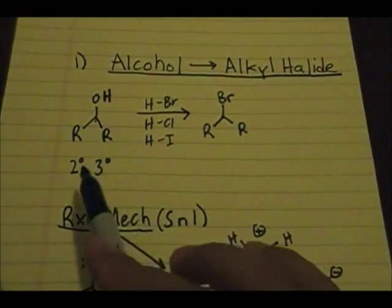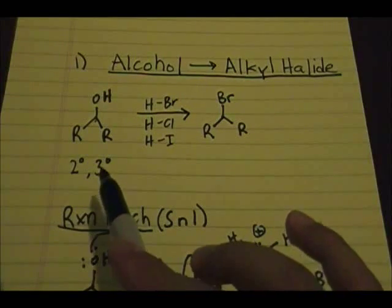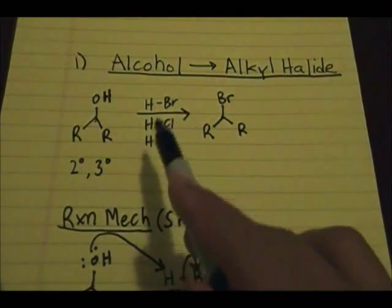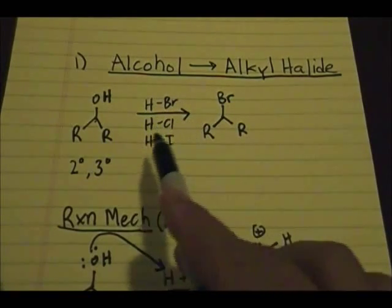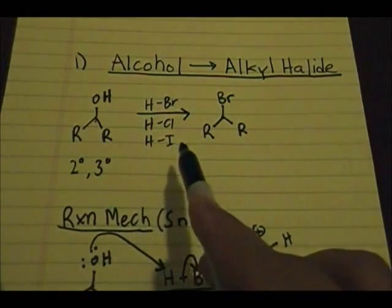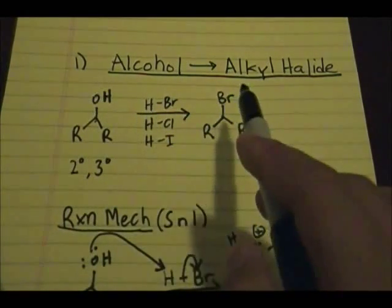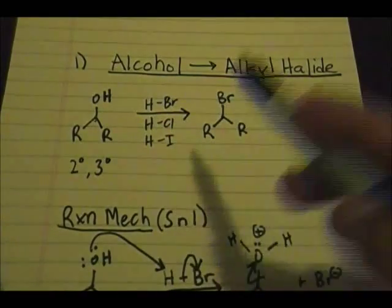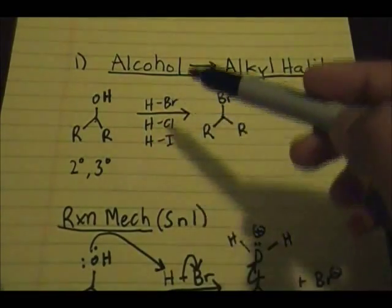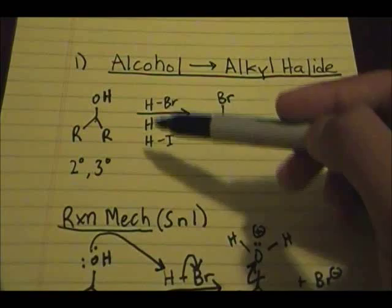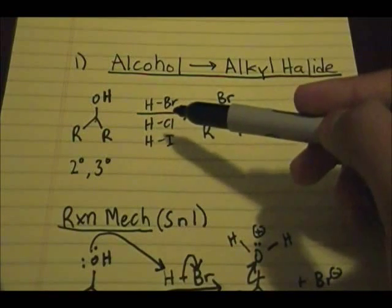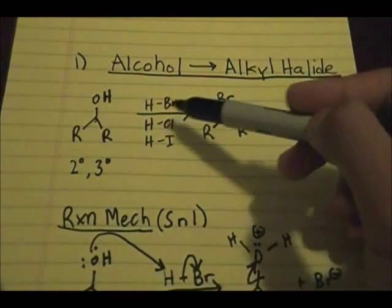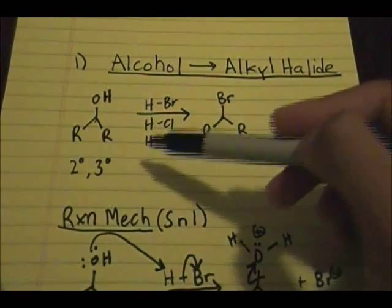So if you start off with a secondary or tertiary alcohol, you would use one of these reagents — HBr, HCl, or HI — to substitute the OH for Br, Cl, or I. Basically, the OH is substituted for a halogen, and the halogens come in these pairs: HBr, HCl, HI.